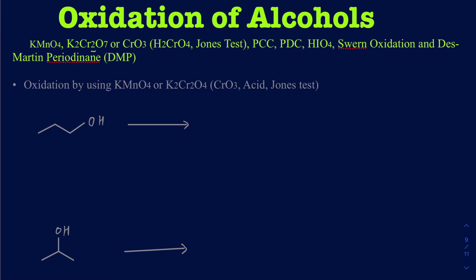In this video I'm going to be talking about how to oxidize alcohols and aldehydes using various oxidizing agents. That includes manganate — potassium permanganate — or the dichromate, or CrO3 which technically creates chromic acid (H2CrO4), also called the Jones test. In addition, we'll look at PCC, PDC, HIO4 for oxidizing diols, and the Swern oxidation, which is more common these days.